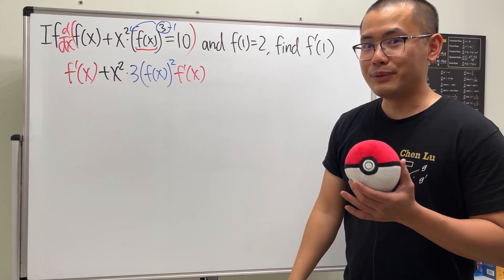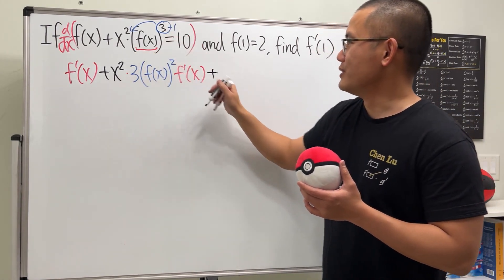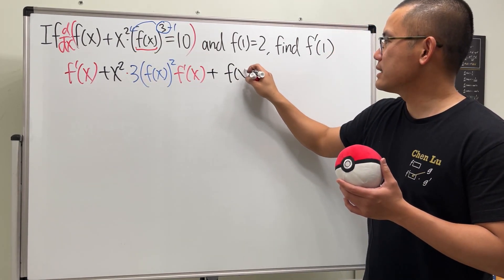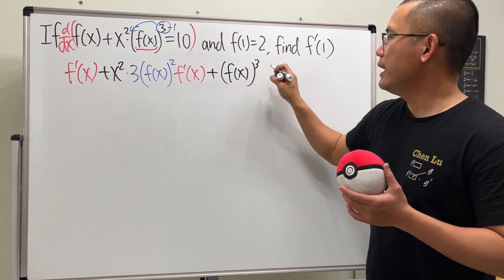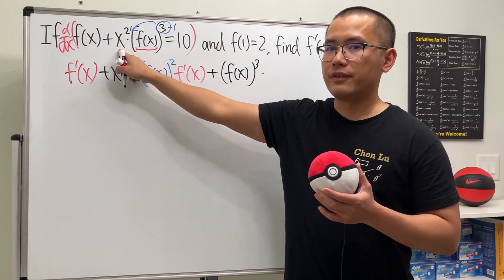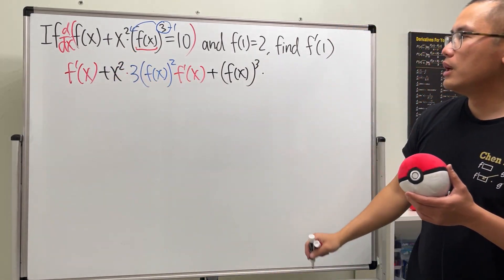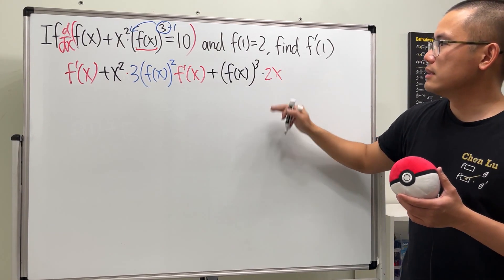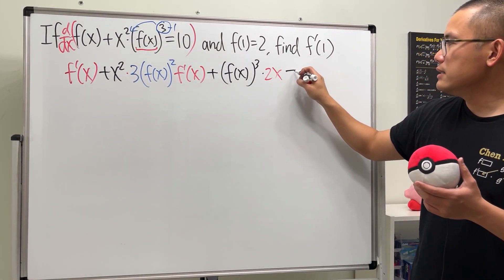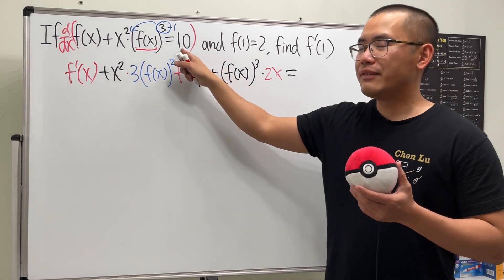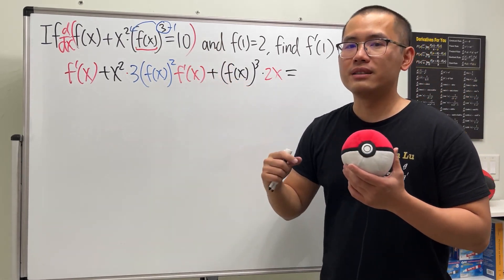And we will have to add the second function, which is this. So we will have f of x raised to the third power, and we multiply by the derivative of the first, which is just going to be 2x. So this is the derivative from here. And all in all, this is not equal to 10. We will have to differentiate 10, and we get 0.